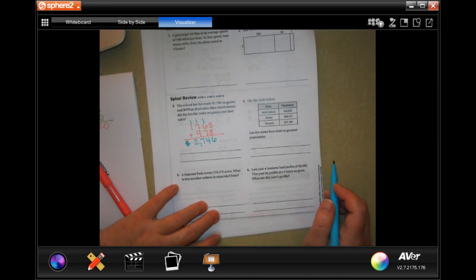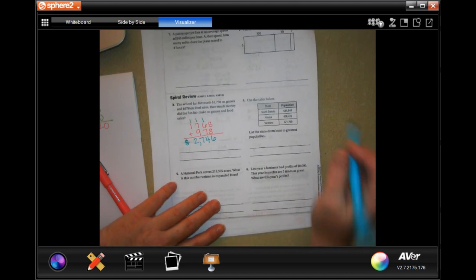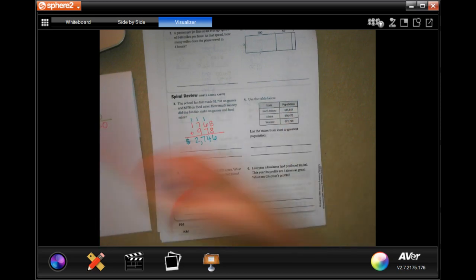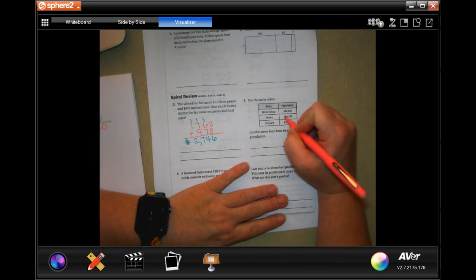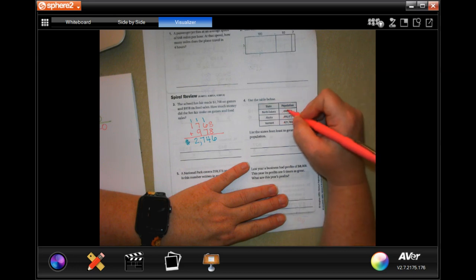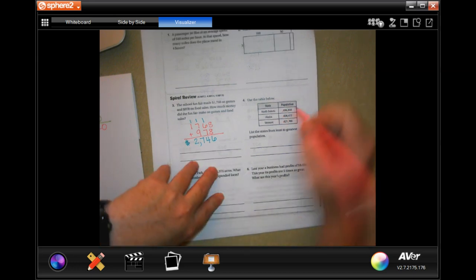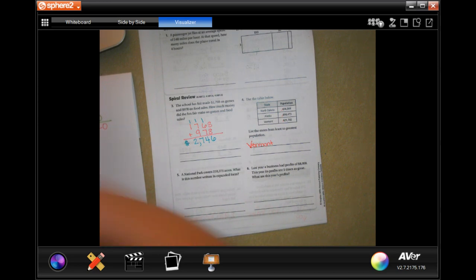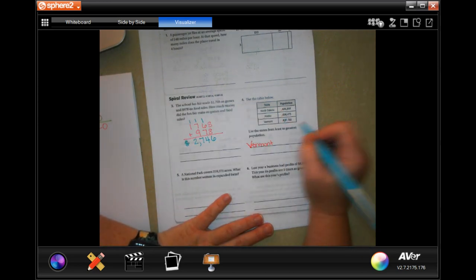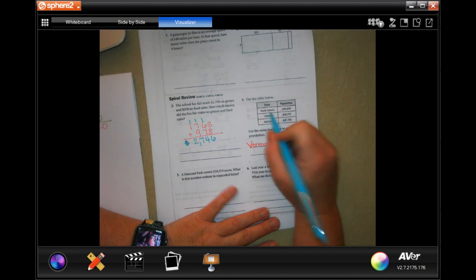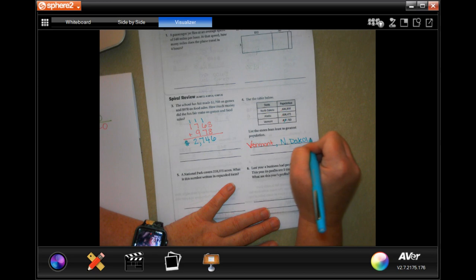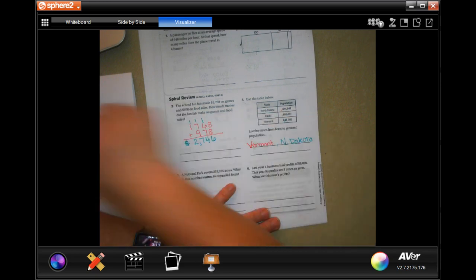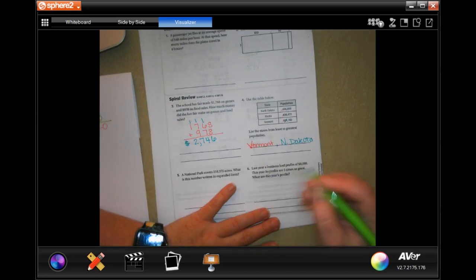Number 4 says to list the states from least to greatest, so smallest first. Well, they all start with 6s, right, so we're not going to use that one. Now we have a 4, a 9, and a 2. So that means Vermont, which we're going to capitalize, is going to be first. That one's the one that has a 2 there. Now we have a 4 or a 9, which means North Dakota, and lastly, Alaska.